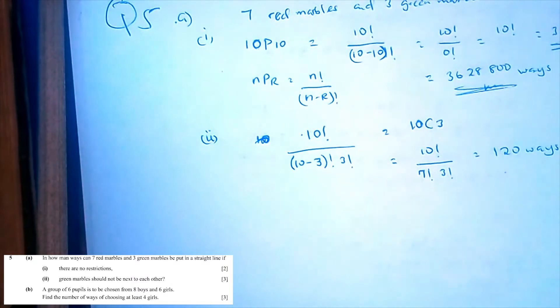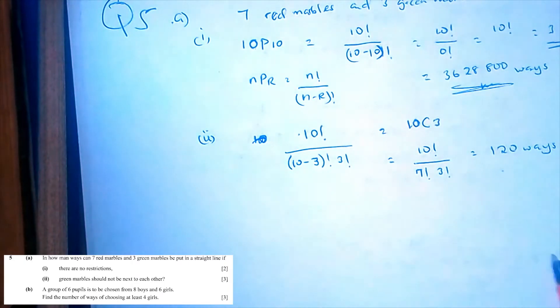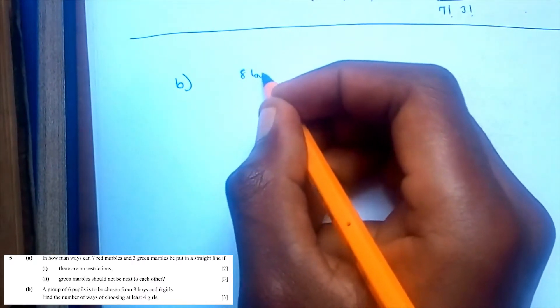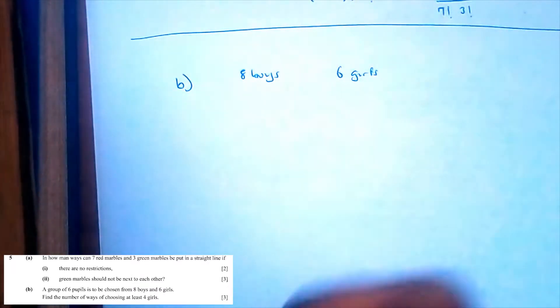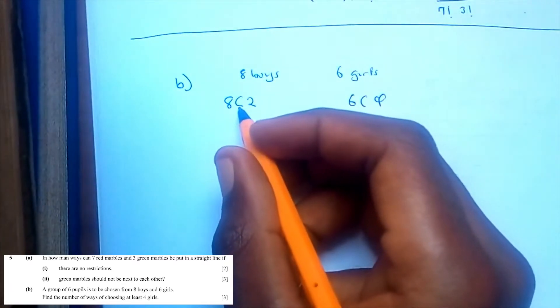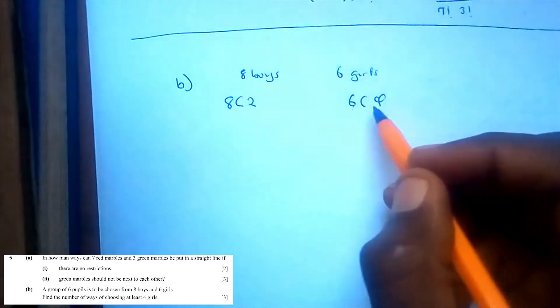A group of 6 pupils is to be chosen from 8 boys and 6 girls. Find the number of ways of choosing at least 4 girls. Since we have 8 boys and 6 girls, and we've already been given the 4 girls that they're supposed to choose, that would be 6 choose 4 and 8 choose 2, since we're choosing 2 boys from the 8 boys and 4 girls from 6 girls.